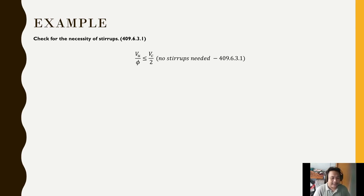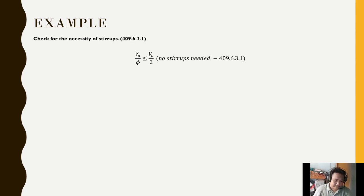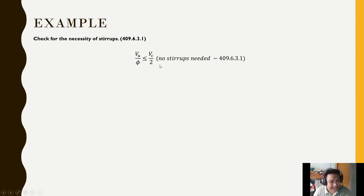φVC/2 = 0.75 × 88.2 / 2 = 44.1 kN. Comparing with VU: even the smaller VUL = 77.22 kN divided by φ = 0.75 gives 102.96 kN, which is greater than 44.1 kN. Therefore, stirrups are needed for both the left and right supports. The center shear is much smaller, so stirrups may not be needed there.